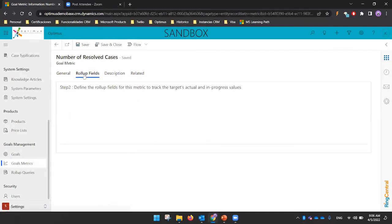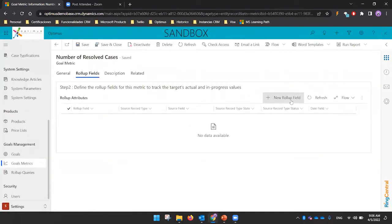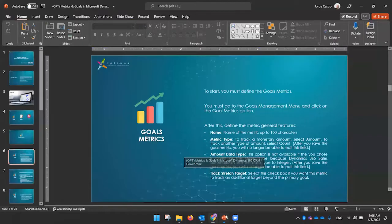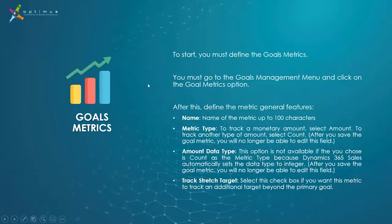After saving, you need to define the rollup fields. The rollup fields allow you to define what exactly you want to summarize or count — for example, counting the number of resolved cases. You need to define the name of the goal metric and the type: Amount is for money, and Count is for counting records or elements. You also define the amount data type, which depends on the metric type selected.